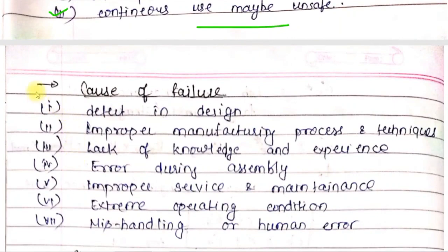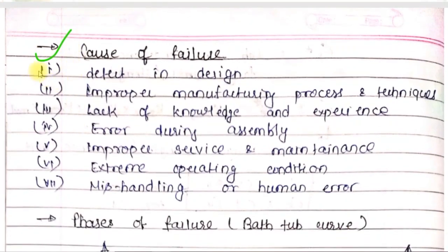Now let's look at causes of failures. First cause is defective design - if the product design is defective or has errors, failure will definitely occur. Next is improper manufacturing process and techniques. Sometimes we choose the wrong manufacturing process or techniques for making a mechanical component, which can cause product failure.